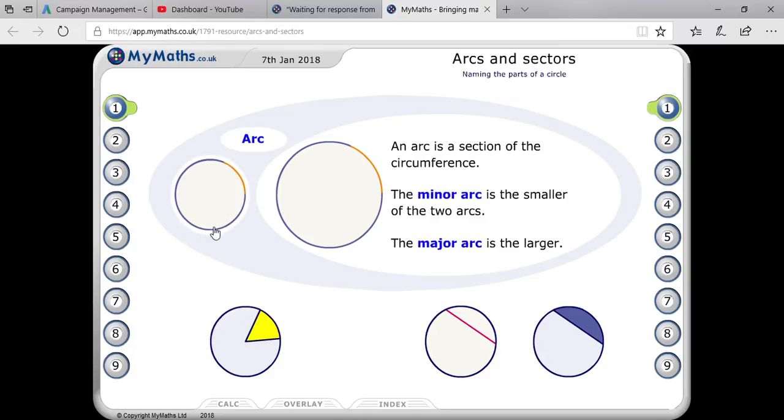So the minor arc, is that the smaller one? The minor arc is the orange one, and the blue one is the larger arc or major arc. So the minor arc is just part of the circle? Yes, the minor arc is just part of the circle. And the major arc is the entire rest of it? No, not the entire circumference. The minor arc is the orange part only, and the major arc is the remaining part of the circumference.